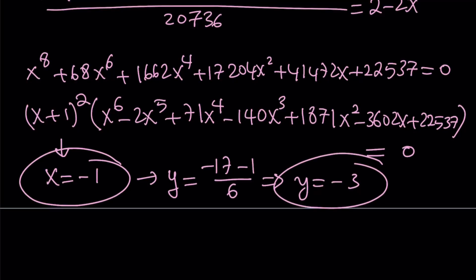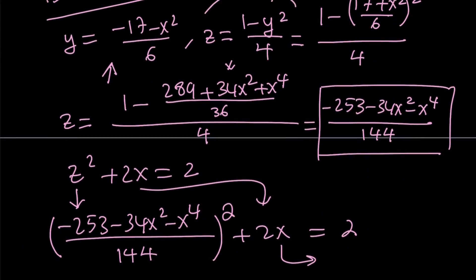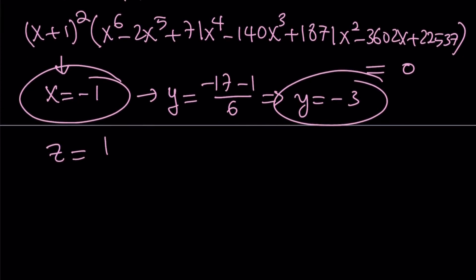Awesome. Let's go ahead and find z. You know that z can be written as 1 minus y squared over 4 from here. And we know that y is equal to negative 3. So it's 1 minus 9 divided by 4. And from here, z is just going to be negative 2.